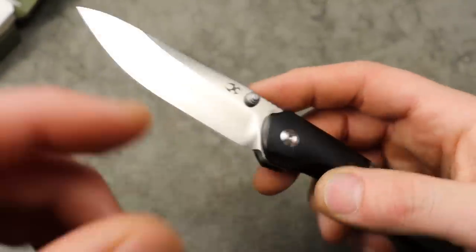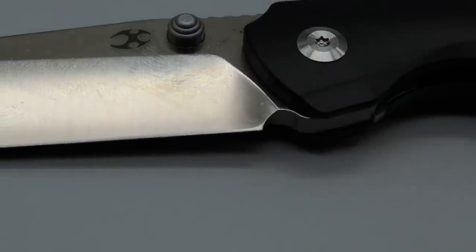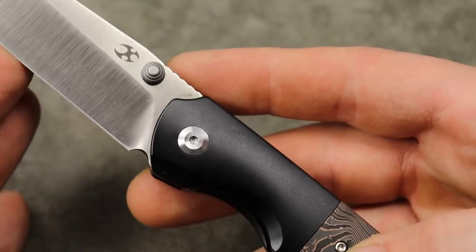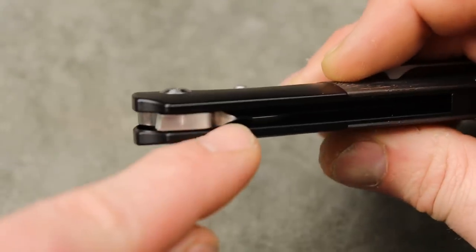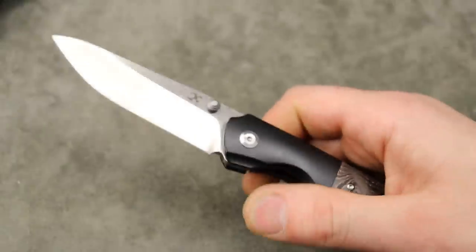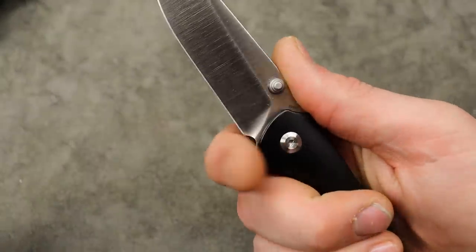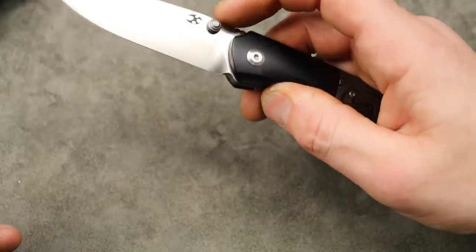But my biggest complaint is this plunge grind and choil. Just looking at it, you already see, they already started a smile. So you know how it's going to go when you sharpen it. Now, the one beautiful thing is that you can add a choil in because it looks like it is internal stop pins. So it does have internal stop pins. So nothing's stopping you from cutting in your own choil, finger choil or sharpening choil. If you want to, man, this thing is smooth.